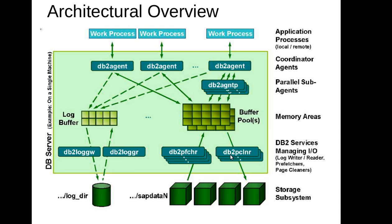DB2PCLNR means page cleaner, and PFCR means prefetcher. The prefetcher moves data from the disk to the buffer pool. The page cleaner basically cleans up the memory — if you have a filled buffer pool and need more data inserted, it cleans up old data from the buffer pool and writes it to disk. The prefetcher works like an astrologer — before you even request data, it predicts what data you need and pushes it from disk to buffer pool in advance.